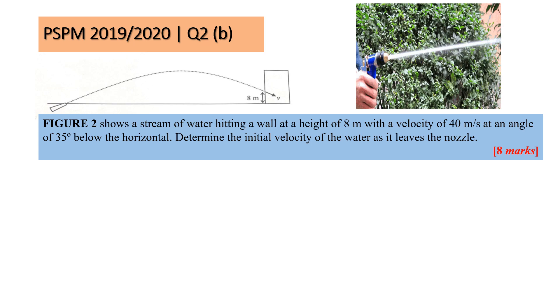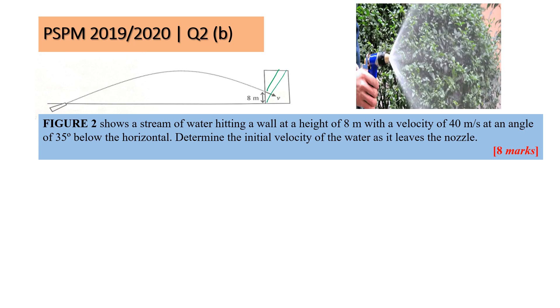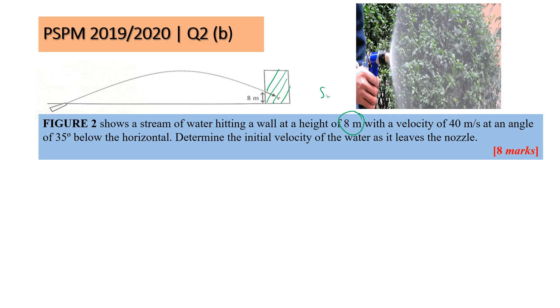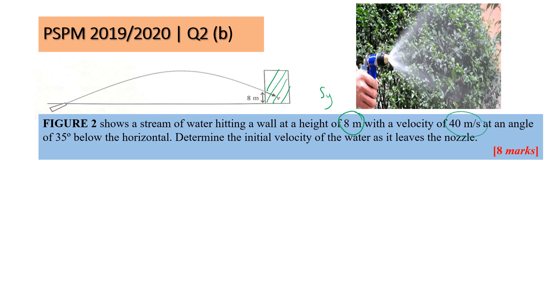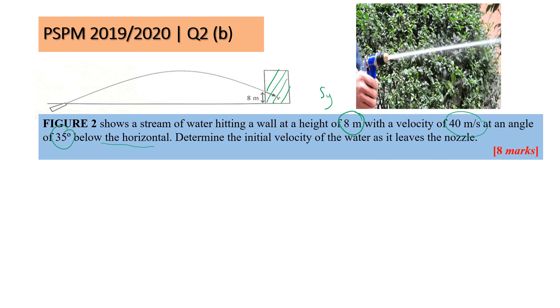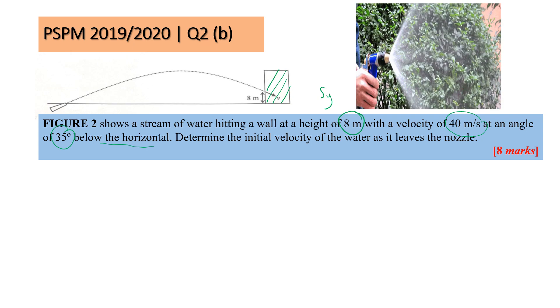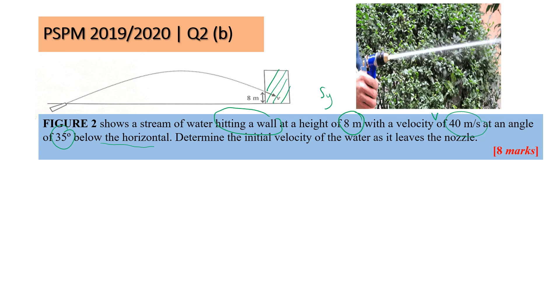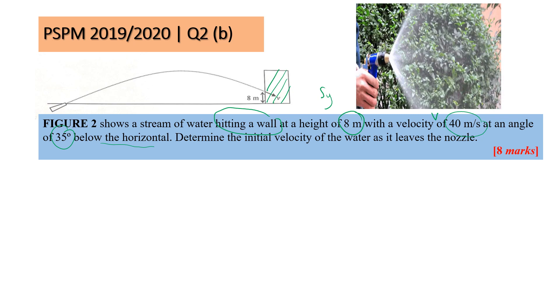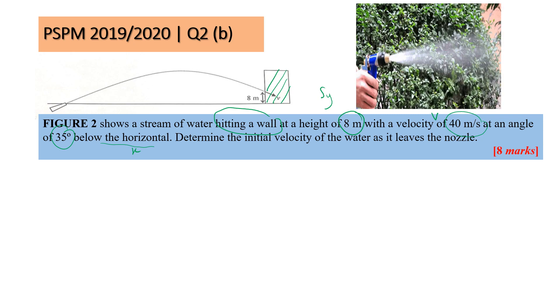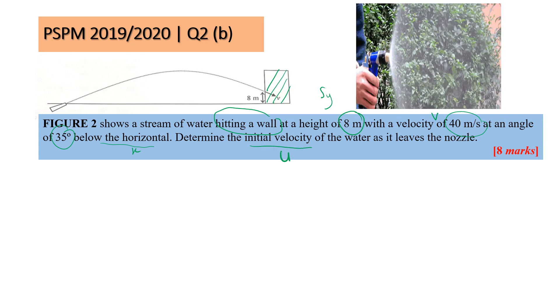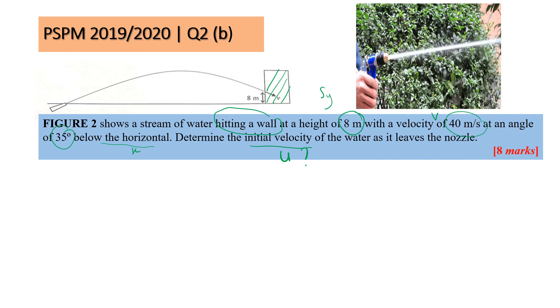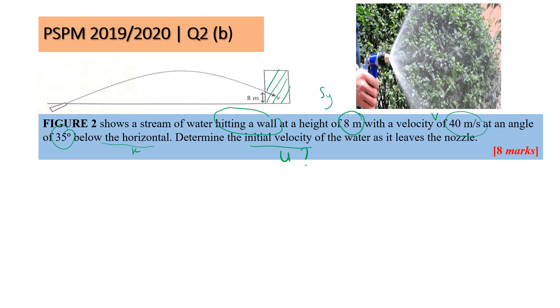This is question on PSPM 2019-2020, question number 2B. Figure 2 shows a stream of water hitting a wall. This is your wall, this is your water. At height 8 meters. The velocity is 40 ms⁻¹ at angle 35 degrees below the horizontal. This is the nozzle, which is the water stream hitting the wall.